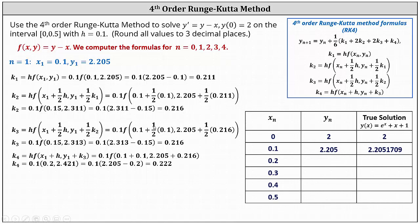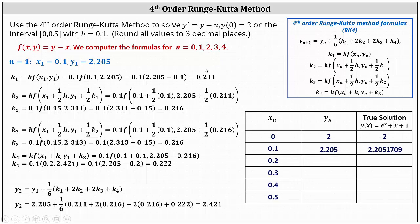Now we can determine y sub 2. y sub 2 is equal to y sub 1 plus one-sixth times the sum of k sub 1, 2k sub 2, 2k sub 3, and k sub 4. The final result is y sub 2 equals 2.421. Let's go ahead and record this in the table and compare it to the true value.